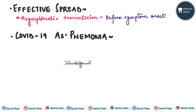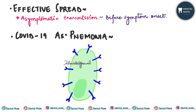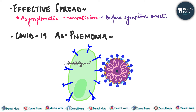Why does COVID-19 manifest as pneumonia? This is because lung epithelial cells — specifically the type 2 pneumocytes — express the ACE2 receptor. The S1 subunit of the spike protein has a receptor binding domain (RBD) which has an affinity for the ACE2 receptor. Therefore, whichever cells of the body express ACE2 receptors will get infected by the SARS-CoV-2 virus.